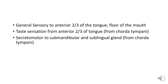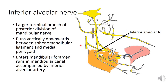The last branch is the inferior alveolar nerve, which is itself an important exam topic. It is the larger terminal branch of the posterior division of the mandibular nerve. It runs vertically downwards between the sphenomandibular ligament and the medial pterygoid muscle, enters the mandibular foramen, and runs within the mandible in the mandibular canal, accompanied by the inferior alveolar artery.